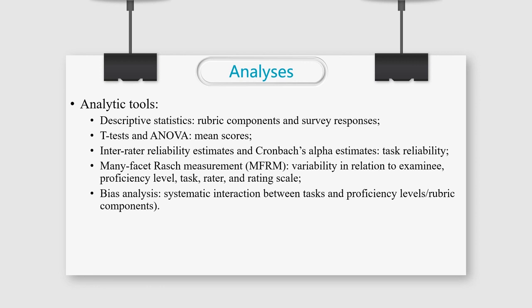External and internal reliability of test tasks was assessed by inter-rater reliability estimates and Cronbach's alpha estimates. Many-facet Rasch measurement, which is also called MFRM, was used for reliability related to examining proficiency level, task, rater, and rating scale. And bias analysis was introduced for a systematic interaction between tasks and proficiency levels, and between tasks and rubric components. Next, Eden will talk about the result of the study.